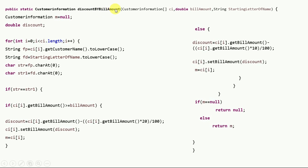Inside discountByBillAmount, the input parameters are the CustomerInformation array, a double bill amount, and a String starting letter of name. Initialize a CustomerInformation object M to null and a discount variable. Create a loop from zero to the array length. Since case sensitivity is not mentioned, convert the customer name to lowercase and store it in a String variable. Also store the starting letter search parameter in a String variable fd.